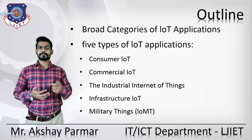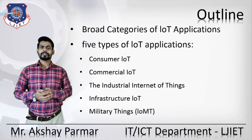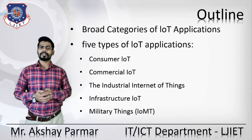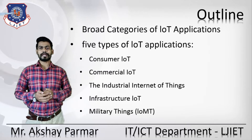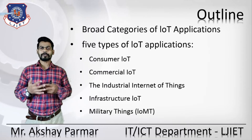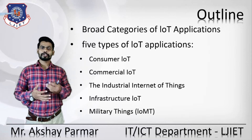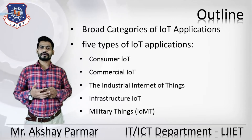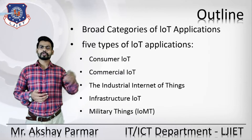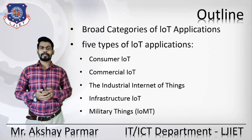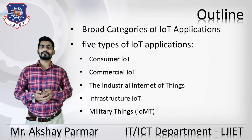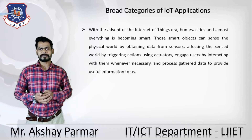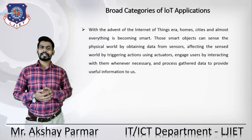We will discuss where IoT is used and its five application types. The five types of IoT applications are: Consumer IoT, Commercial IoT, Industrial IoT, Infrastructure IoT, and Military of Things. We will look at each domain and what kind of things are covered under each type of application.